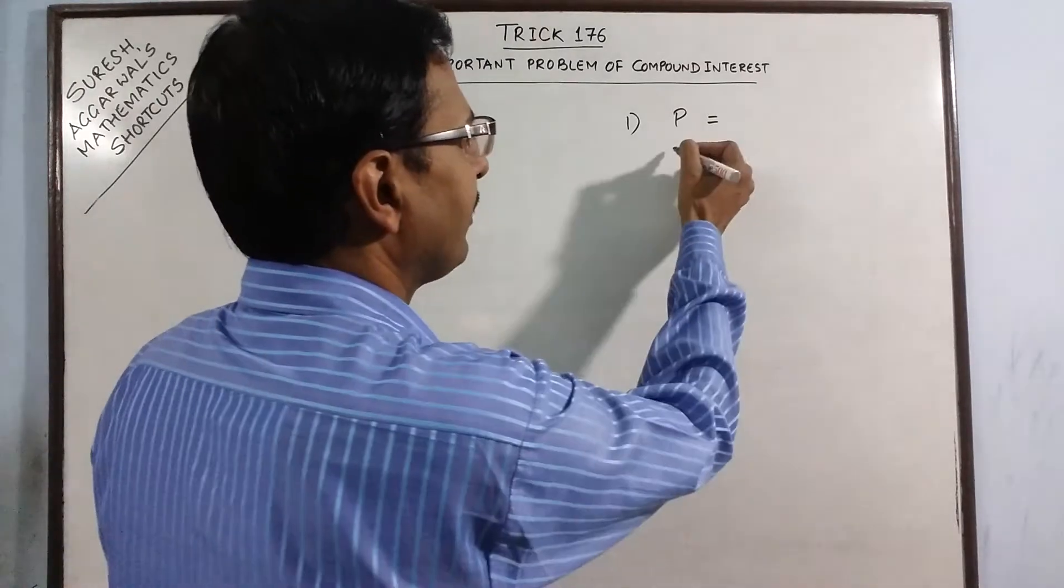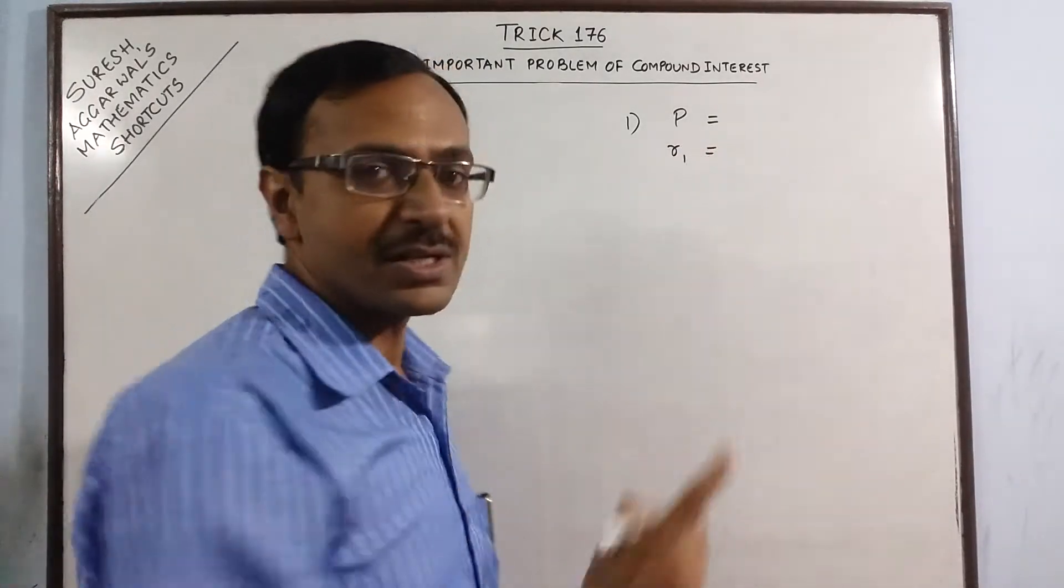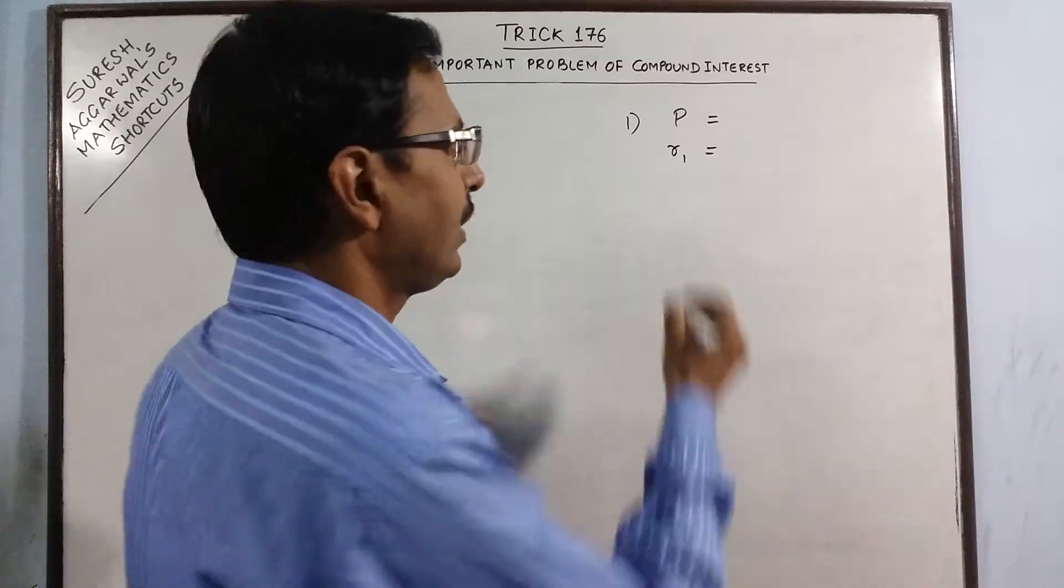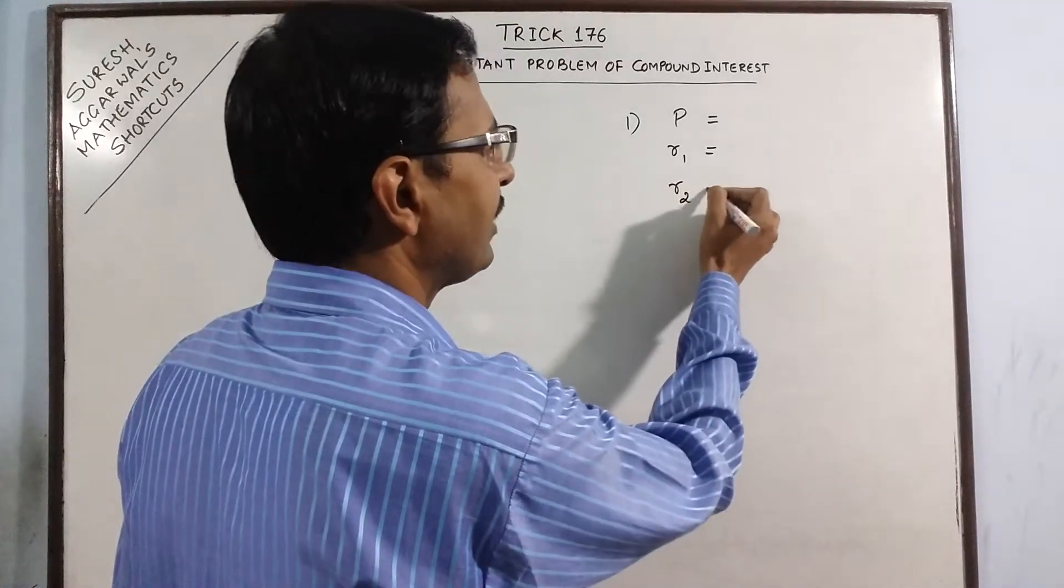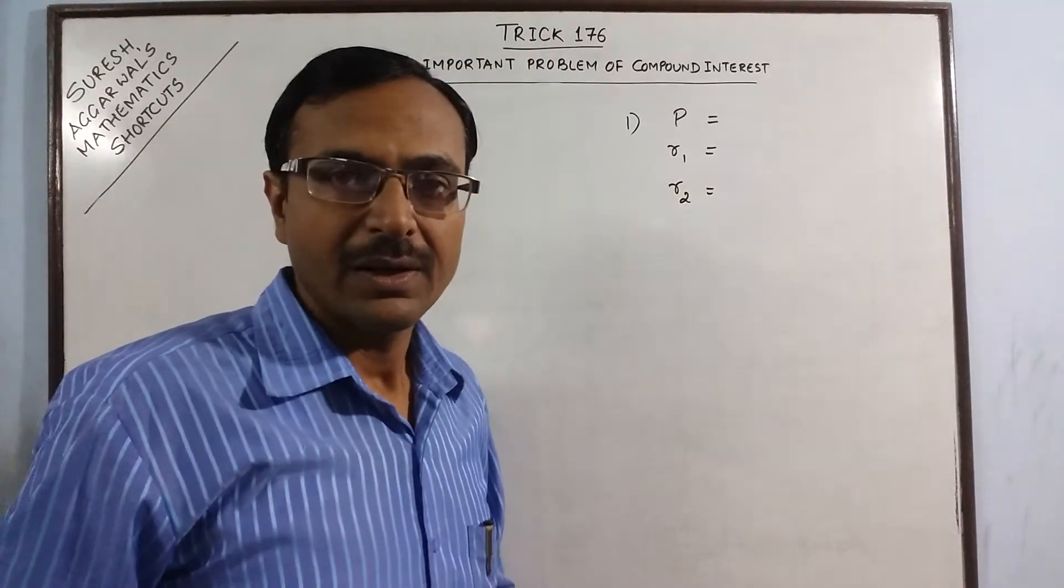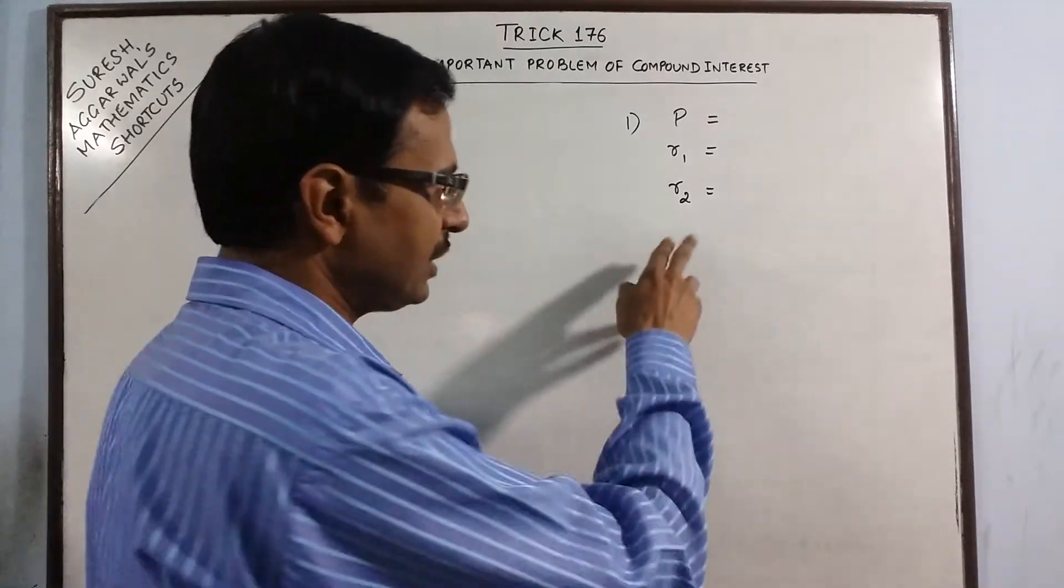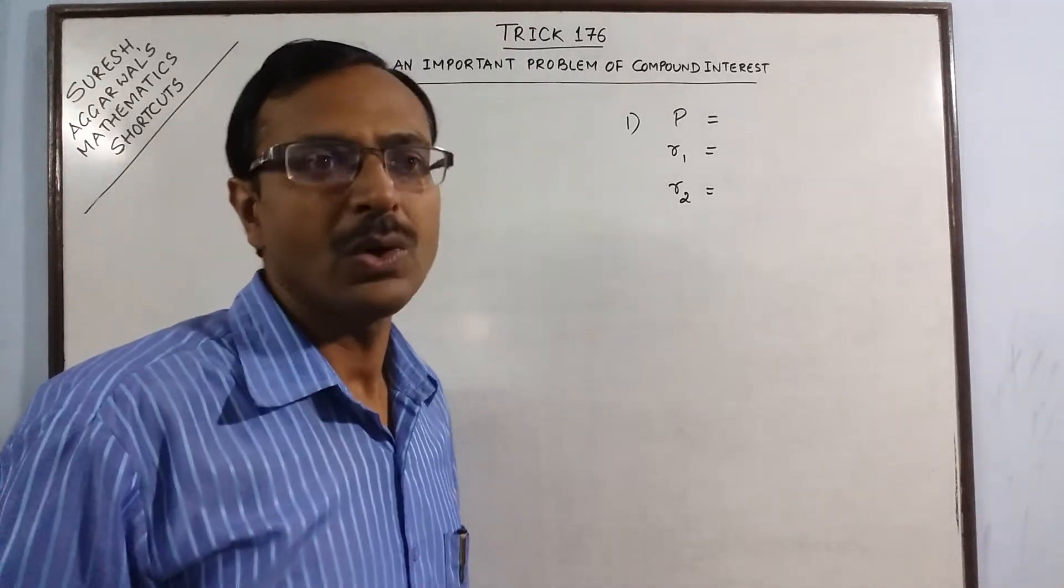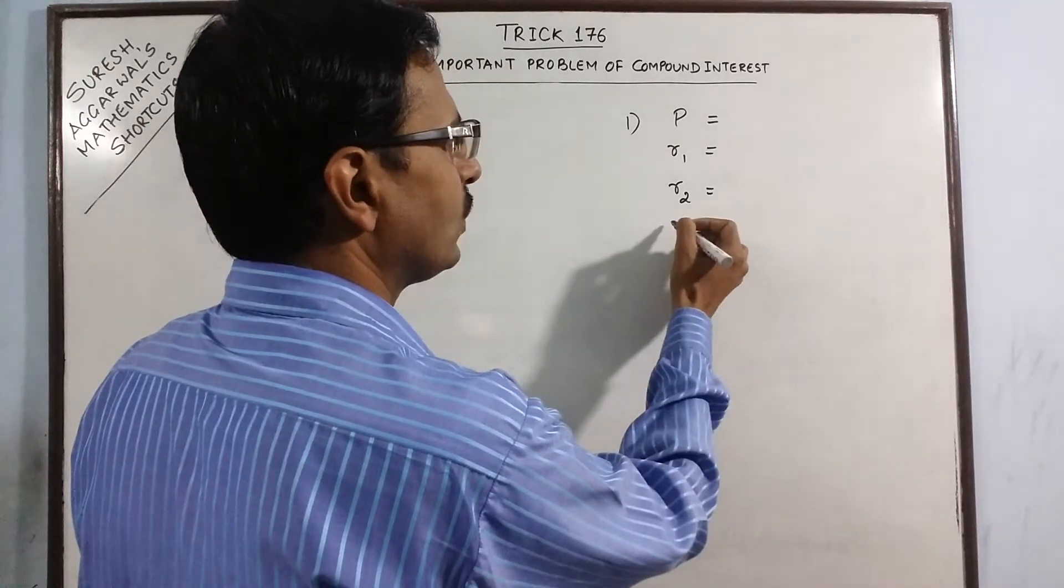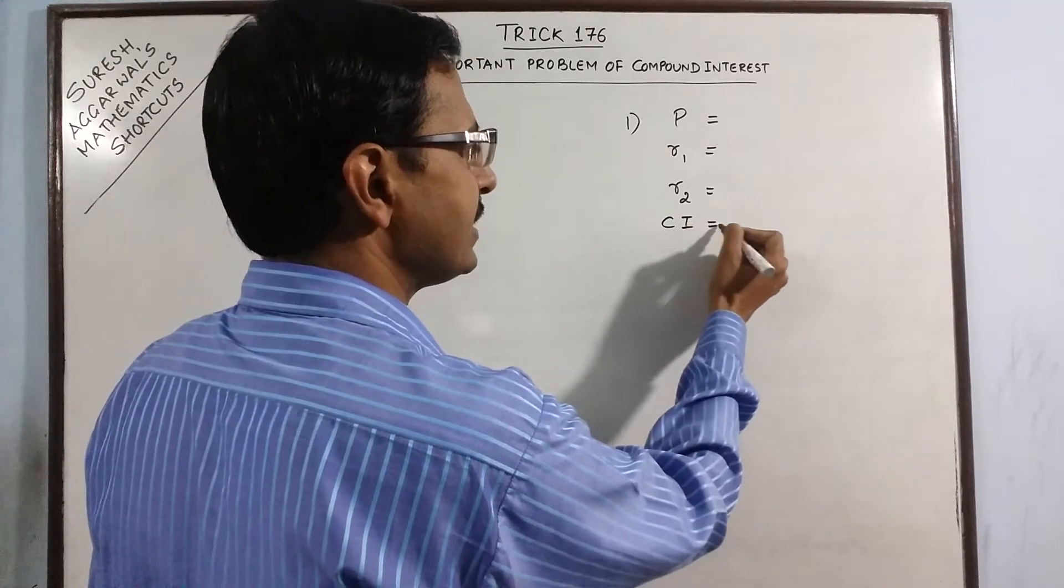Like we have R1 that is the rate of interest for the first year, R2 the rate of interest for the second year and consecutively we can have three years also. So in such cases, we need to find out the compound interest.